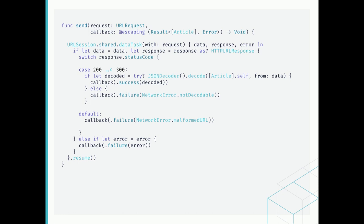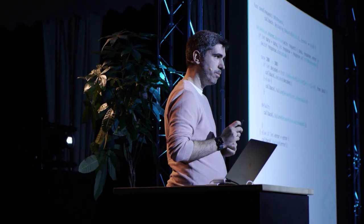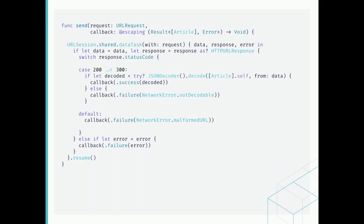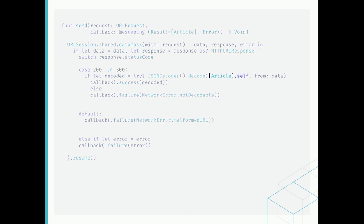I have seen code like this to be quite common across different code bases. However, if we pay a closer look, we may encounter some potential issues. For instance, if we focus on this send function, we can distinguish that it will be exactly the same code if we want to decode the response to any other type. But it is tightly coupled to this specific type, making it less reusable and probably leading to code duplication.